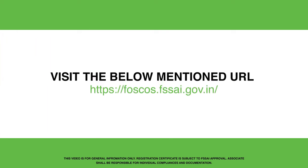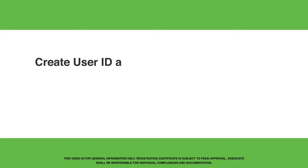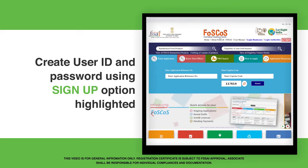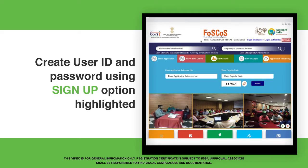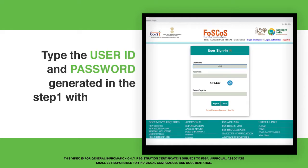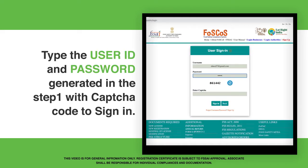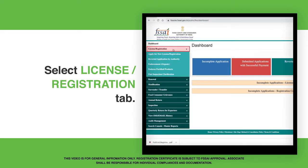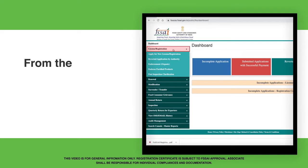Visit the below mentioned URL. Create a User ID and Password using the Sign Up option highlighted. Type the User ID and Password generated in Step 1 along with the CAPTCHA code to sign in. Select the License or Registration tab.